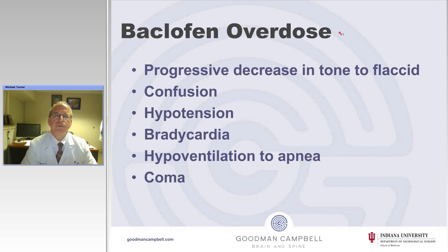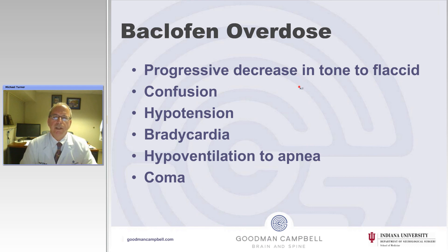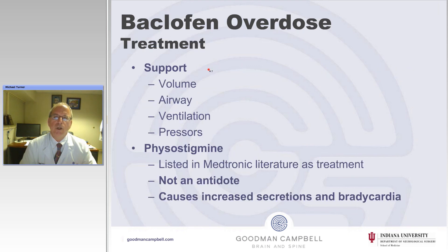When there is an overdose, it's very similar to other GABA agonists such as a benzodiazepine overdose. There is a progressive decrease in tone to flaccid, confusion, hypotension, bradycardia, hypoventilation going on to apnea, and coma.